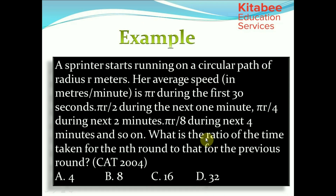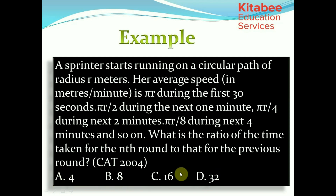This next example appeared in CAT 2004. A sprinter starts running on a circular path of radius r meters. Her average speed in meters per minute is πr during the first 30 seconds, πr/2 during the next 1 minute, πr/4 during the next 2 minutes, πr/8 during the next 4 minutes, and so on. What is the ratio of the time taken for the nth round to that for the previous round? Options: 4, 8, 16, 32. Let's find the time taken for the first and second rounds.